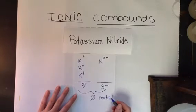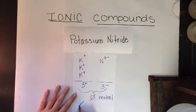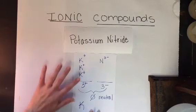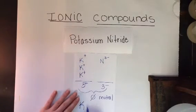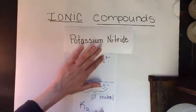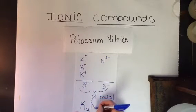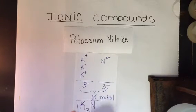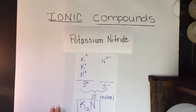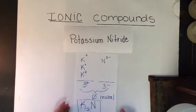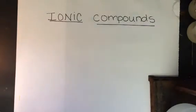So, how do I represent that in a formula? K. How many of them did I need? One, two, three. How many of the N's did I need? I only needed one of them. K three N. That's my neutral formula. No charges. Just how many of each I need. I need three K's and one N to make it neutral. Okay, let's take a look at another example.